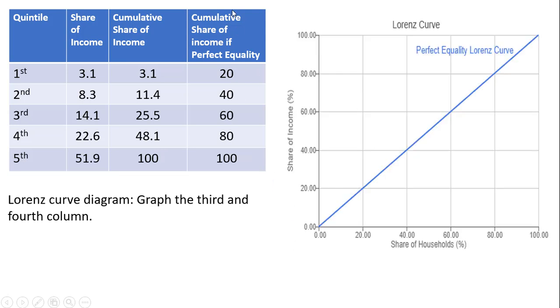Starting with this last column, if we were to graph it, share of household 20%, the first income quintile, they get 20% of the income. Bottom 40% gets 40% of all income and so on. This last column is what is referred to as the perfect equality Lorenz curve.